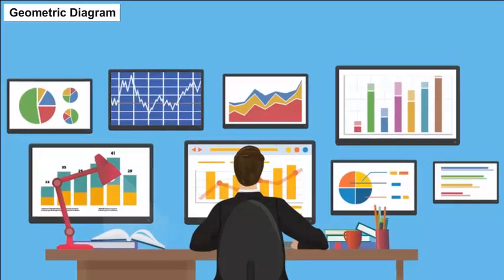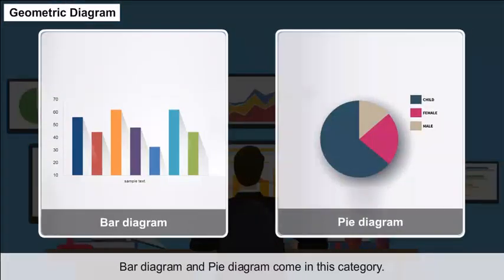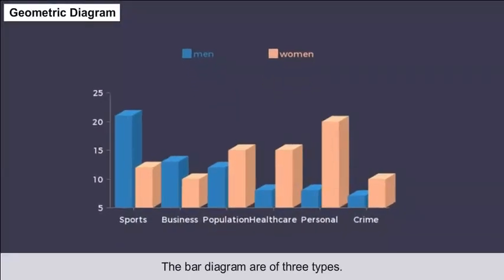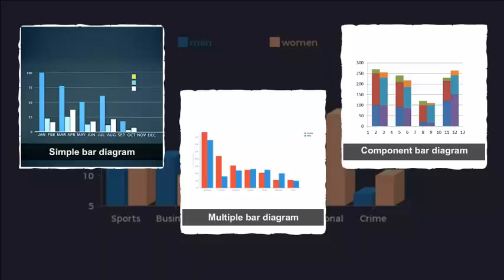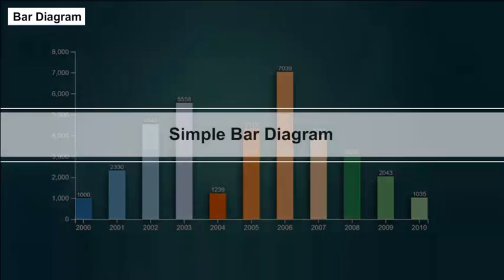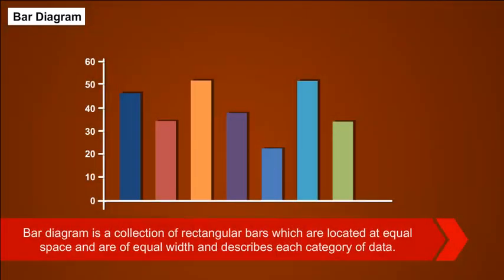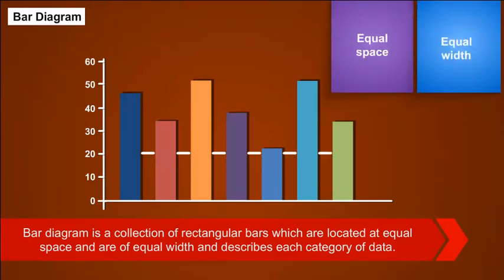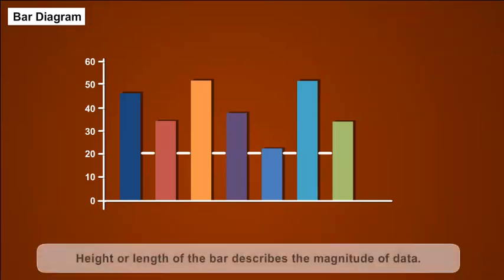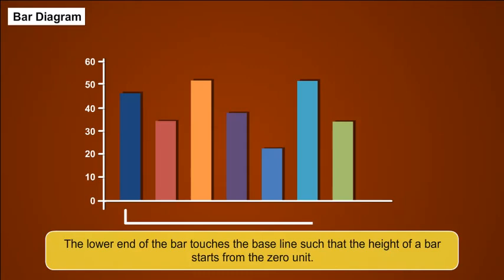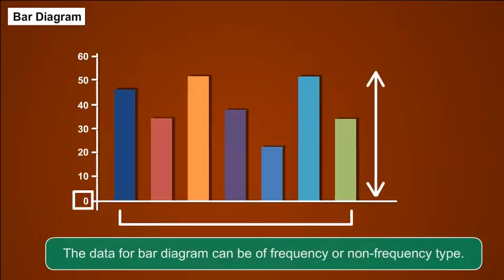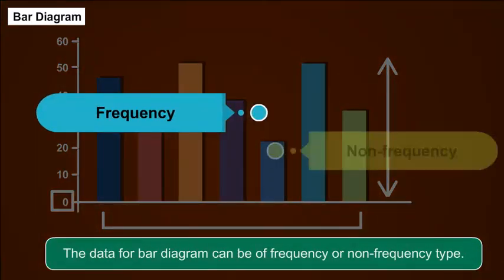Geometric Diagram — Simple Bar Diagram: Bar diagrams and pie diagrams come under geometric diagrams. A bar diagram is a collection of rectangular bars located at equal spacing and of equal width, describing each category of data. The height or length of the bar describes the magnitude of data. The lower end of the bar touches the baseline so that the height starts from zero.